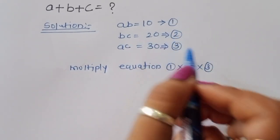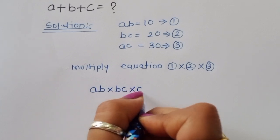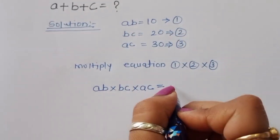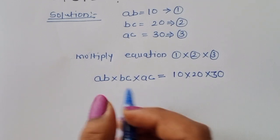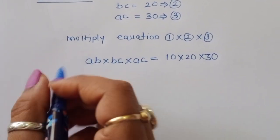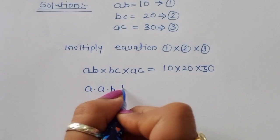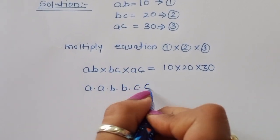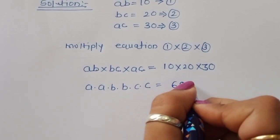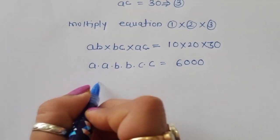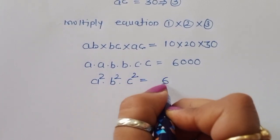Multiplying equations 1, 2, and 3: on the LHS we get AB times BC times AC, and on the RHS we get 10 times 20 times 30. We can expand the LHS as A times A times B times B times C times C, which equals 6000. So A squared times B squared times C squared is equal to 6000.